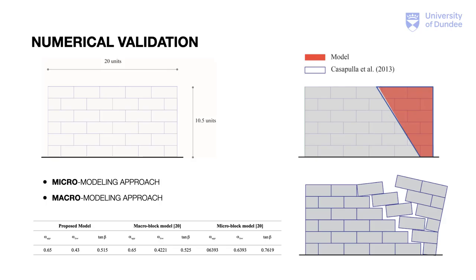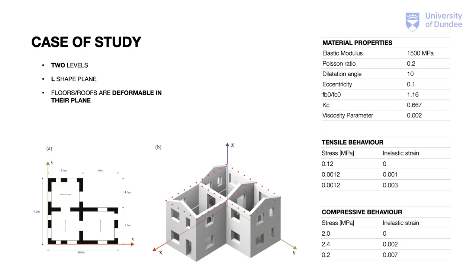Let me introduce some remarkable results about numerical validation and a case study. A masonry wall loaded out-of-plane is considered to validate the suitability of the proposed procedure. The geometry, as well as the mechanical parameters, are taken from literature in order to make our results comparable with those obtained by other researchers. It is extensively studied by Casapulla et al., who solved the problem using both micro and macro modeling approaches. The results obtained by using the proposed formulation and those obtained by adopting the macro block formulation proposed by Casapulla et al. are in excellent agreement.